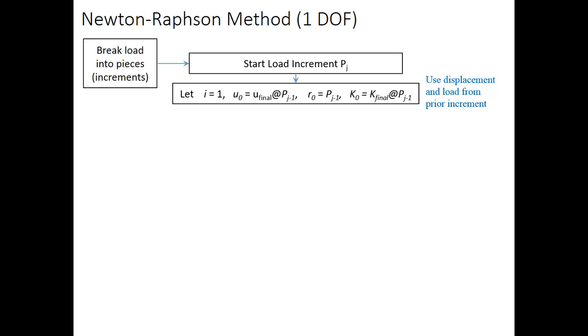So, we're going to have it some initial value, which is equal to what it was at the end of the prior load increment. We have a reaction force, R0, which is what the prior load increment was, and we have our tangent stiffness at the prior load increment as well. Sorry, secant stiffness.